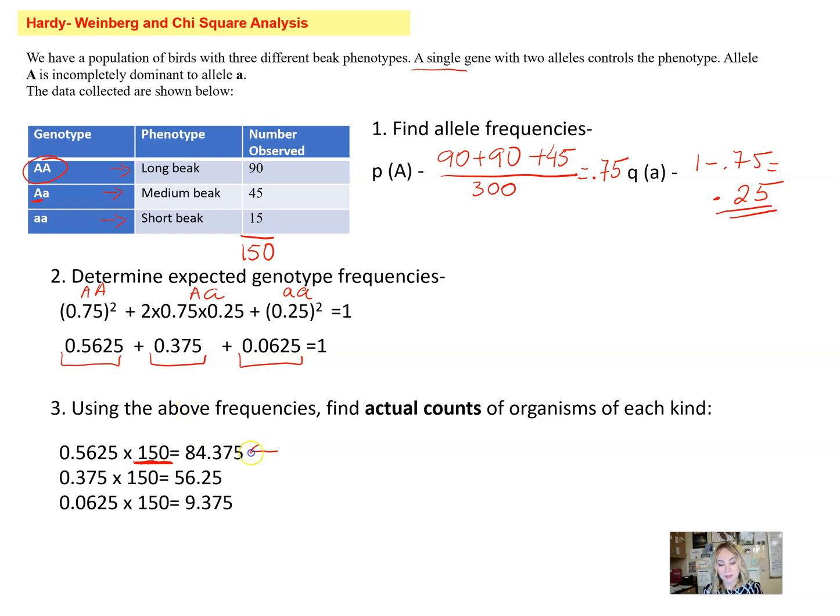The expected counts of organisms here are going to be 84 for big A big A with long beaks, then we have 56 for medium beaks, and then we have 9 for short beaks. This is what we're going to use to be able to figure out and calculate the chi-square.